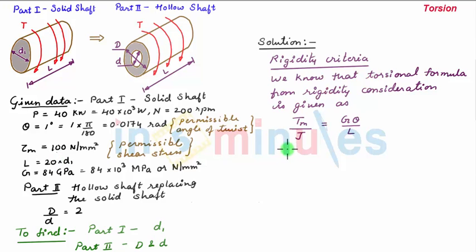Tm is 1.909×10⁶ upon J is π/32 × d₁⁴, and this is equal to 84×10³ multiplied by θ, which is the permissible angle of twist, 0.0174 radians, this whole upon L is 20 times d₁. So the only unknown here is d₁, so upon solving we get the value of d₁ as 64.31 mm.